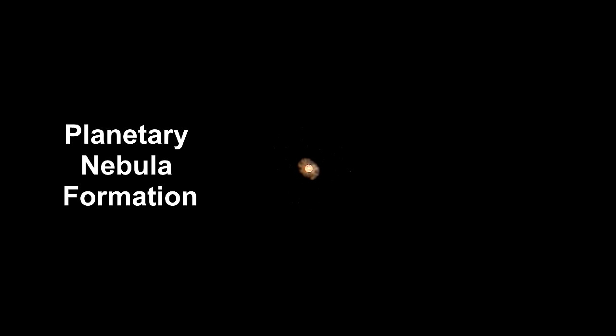As you can see from these first two examples, planetary nebulae are not about planets — they're about stars. They got the name 'planetary' when early astronomers, using small primitive telescopes, first spotted these objects. They looked like disks, similar to what they had seen when they looked at Jupiter and Neptune.